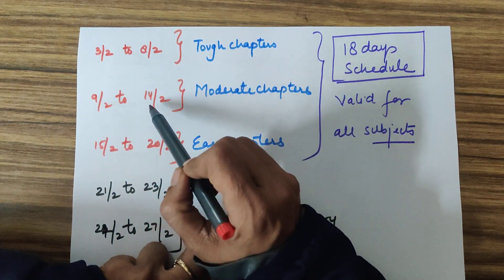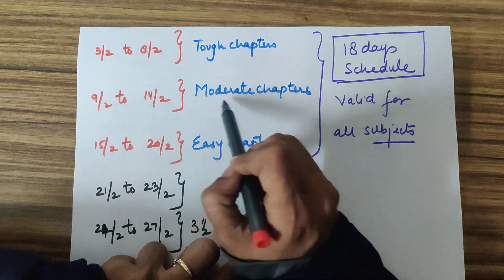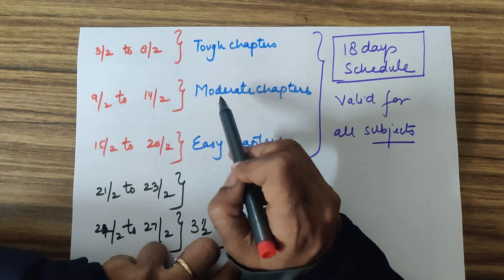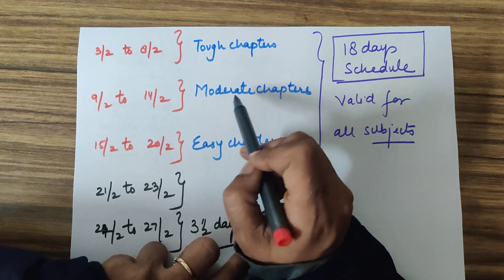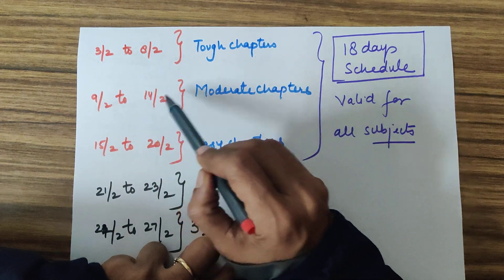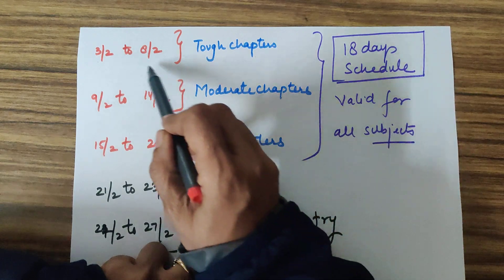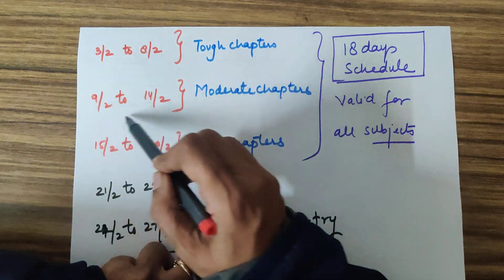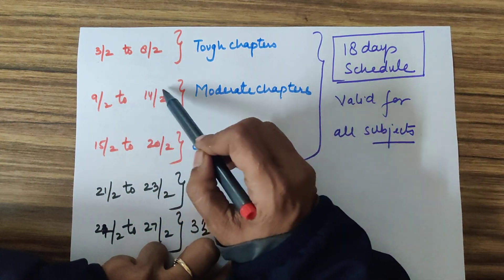9th of February to 14th of February, those chapters you will have to do that are 50-60%, another 40-45% worth to do. 9th of February to 14th of February, moderate chapters every subject. Second week, that is in these 6 days.